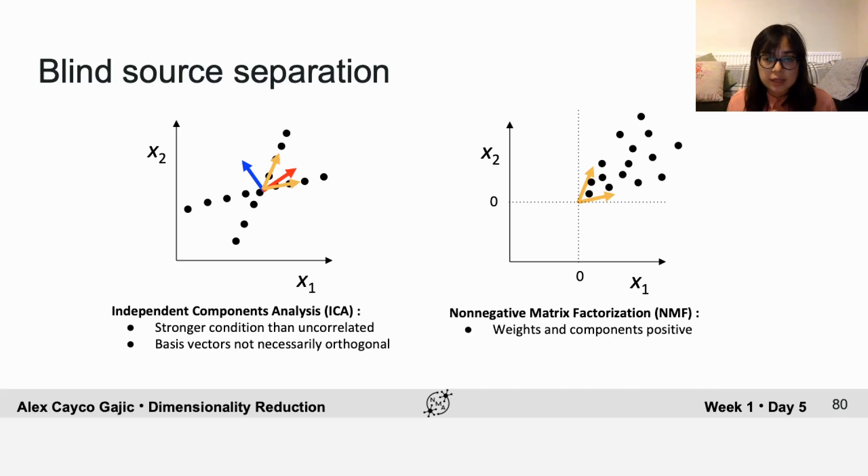Geometrically speaking, it finds basis vectors that are on the edges of a cone that contains all of your data points. And if you run PCA, then you'll find components that have positive and negative values that could be very difficult to interpret. Again, the basis vectors here are not necessarily orthogonal.